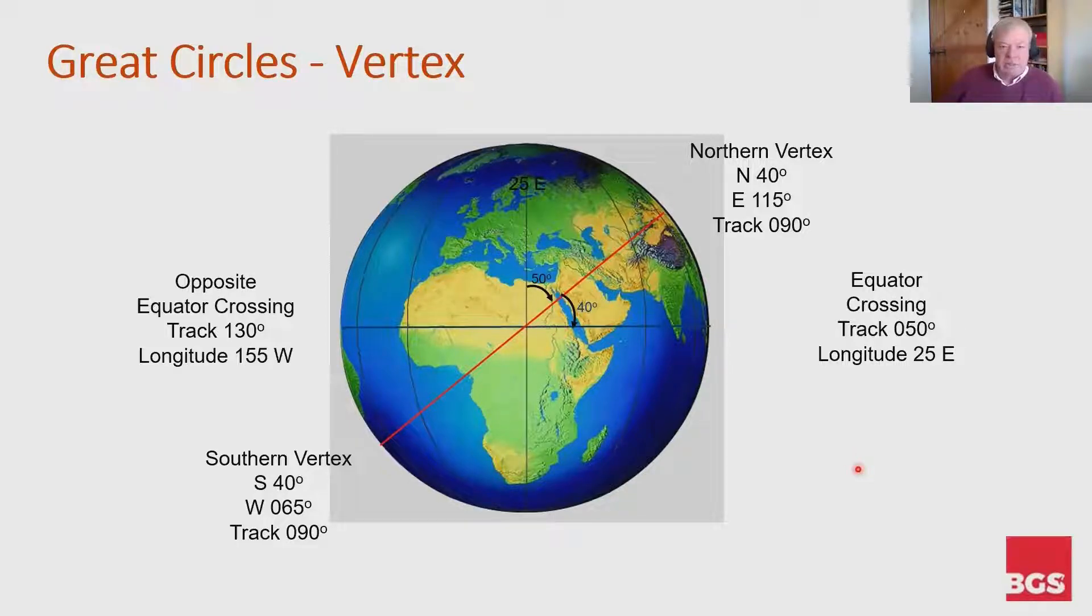So that is the properties of a vertex of a great circle or part of a great circle. Do remember though that every part of a great circle will also have a vertex as well. Highest latitude crossed, track 090 or 270, and in this case we decided on 090.